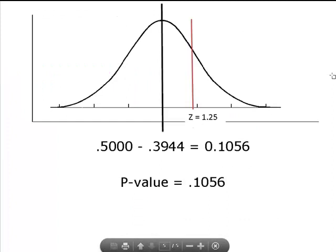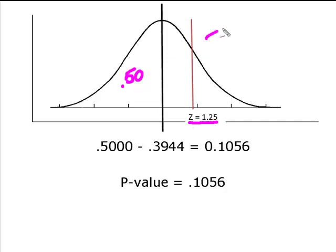I'm now going to come back over to my normal curve. I have my z-score located here at 1.25, probably not to scale. I know that each half of this normal distribution curve contains 50% of the data in total. So this half and this side is the other 50%.